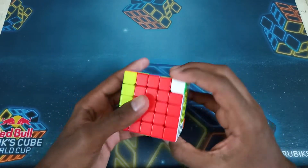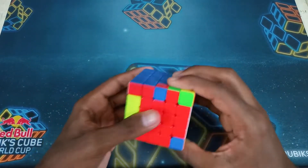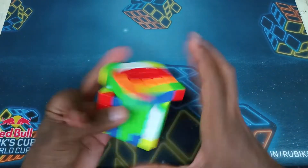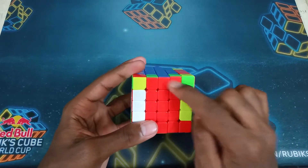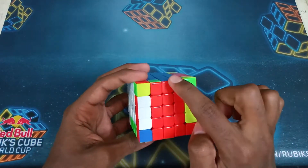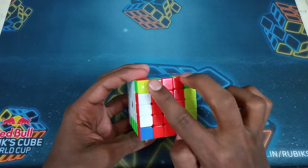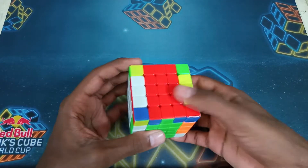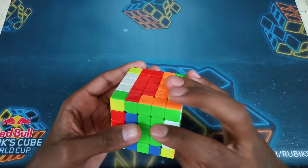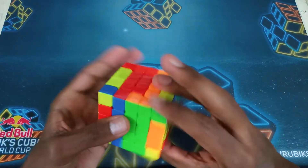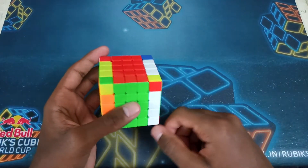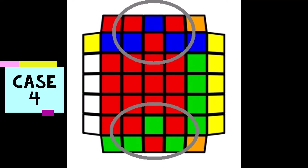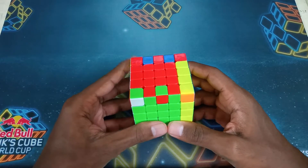A lot of people — myself included — used to flip once and then flip again, but instead you can recognize this case by seeing that the opposite edges all face up. Then you do: R2 F2 U2 R2 U2 F2 R2 — very simple to remember.